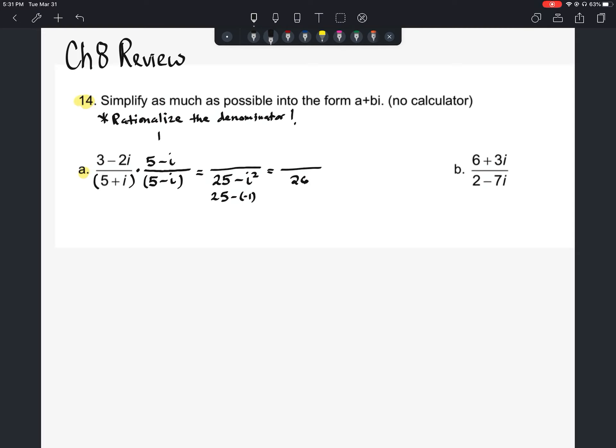In the top, we're going to have to foil this out. So 3 times 5 is going to give us 15. 3 times negative i would be negative 3i. Negative 2i times 5 would be negative 10i. And then negative 2i times negative i would be positive 2i squared.